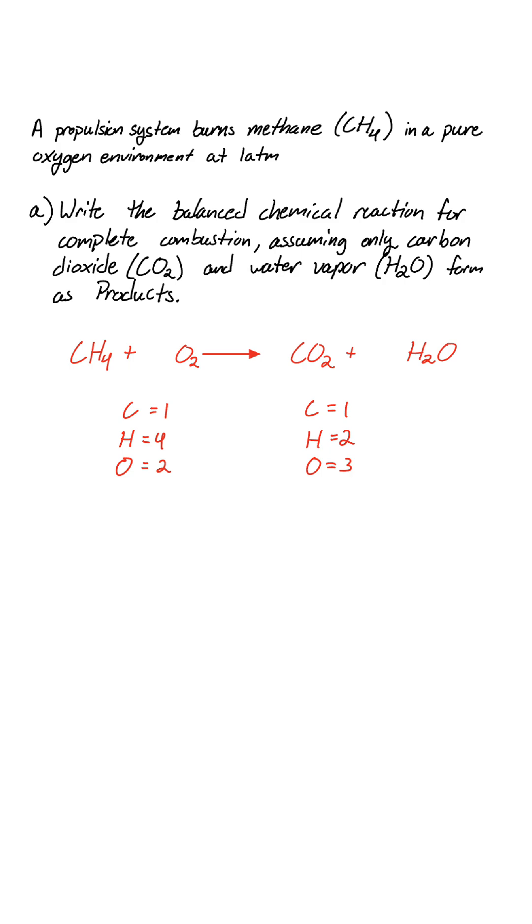Count atoms and balance. One carbon on each side. Four hydrogens on the left, so we need two water molecules on the right. That makes four hydrogens. Now oxygen: we have two in CO2 and two in the two water molecules for a total of four oxygens on the products. So we need two O2 on the reactants. Final balanced reaction: CH4 plus 2 O2 yields CO2 plus 2 H2O.